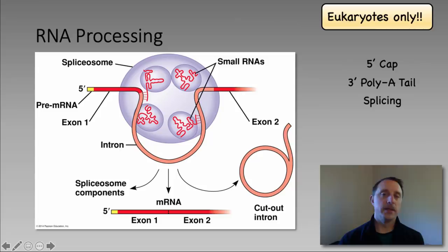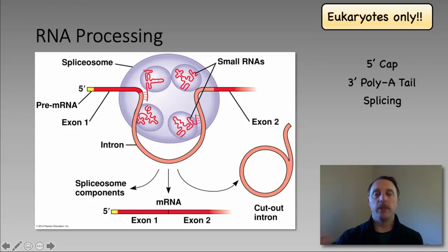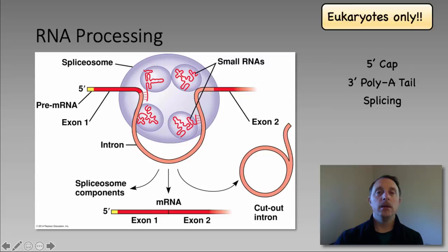The spliceosome recognizes sequences at the beginning and end of the intron, cuts the RNA transcript at those points, and seals the RNA molecule back together to make one single piece of RNA that can now be translated. So these three processing steps — the addition of the 5' cap, the addition of the 3' poly-A tail, and the splicing out of the introns — are very important in order to have the correct message expressed. These only happen in eukaryotes.